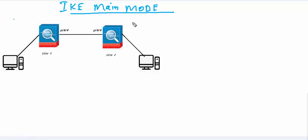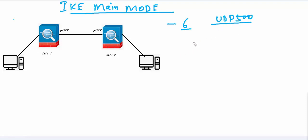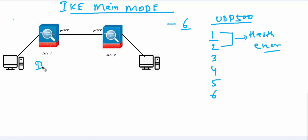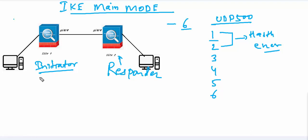In IKE main mode, six messages or six packets are exchanged between two peers. These messages are exchanged on UDP port 500, meaning both source port and destination port are UDP 500. One side initiates and the other becomes the responder.